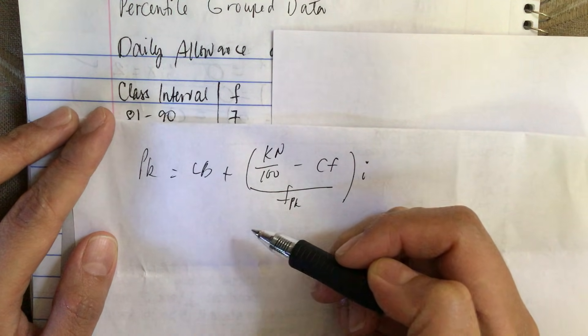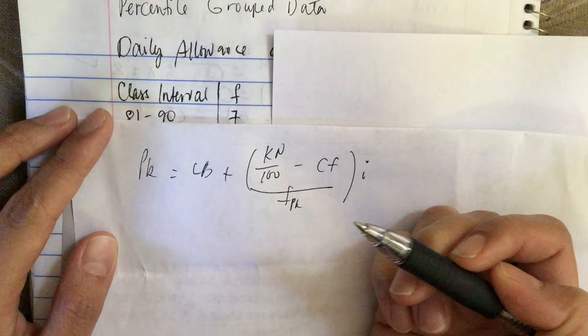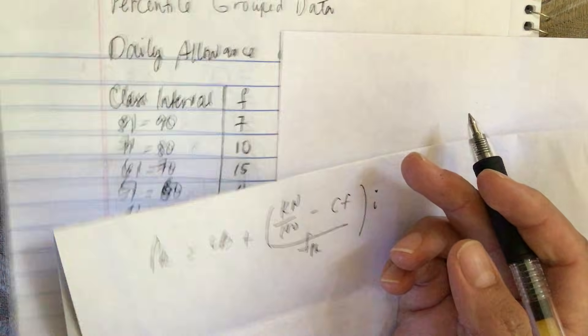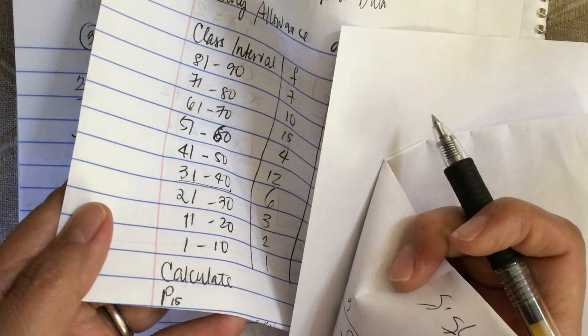n is the number of values, CFB is the cumulative frequency before. Now they want us to find P15.